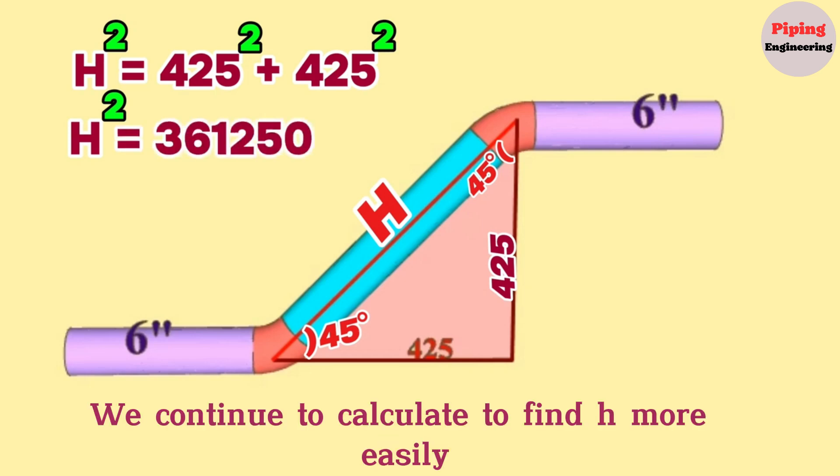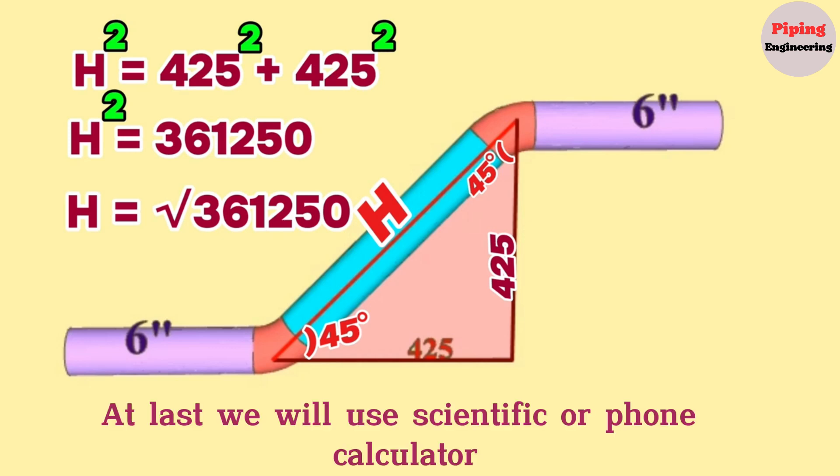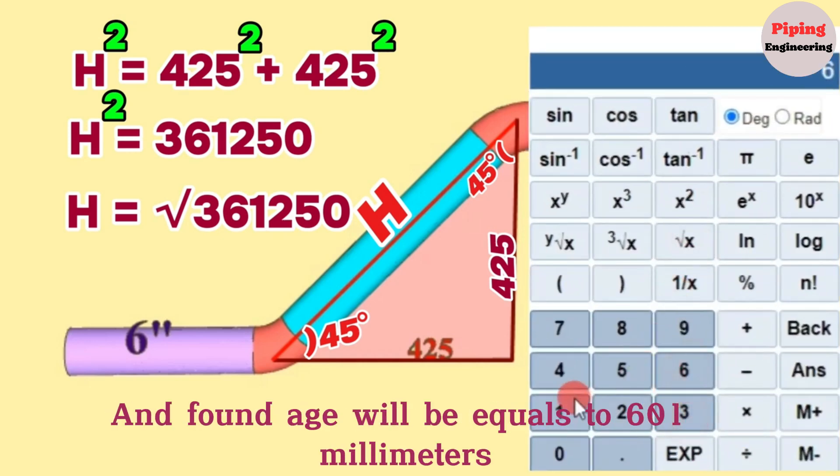We continue to calculate to find H more easily. H will be equal to square root of 361250. At last, we will use a scientific or phone calculator and find H will be equal to 601 millimeters.